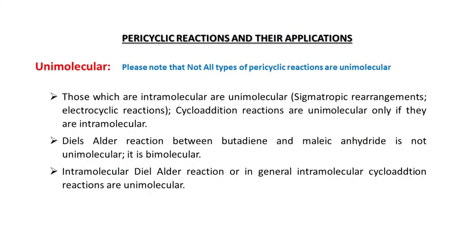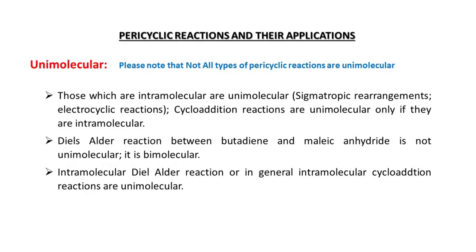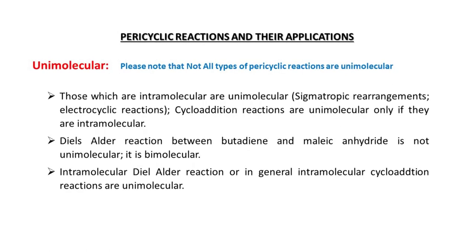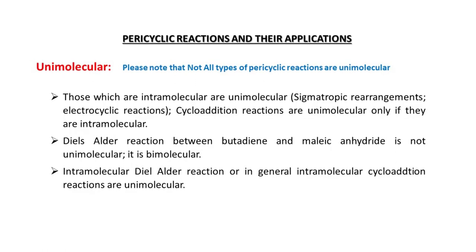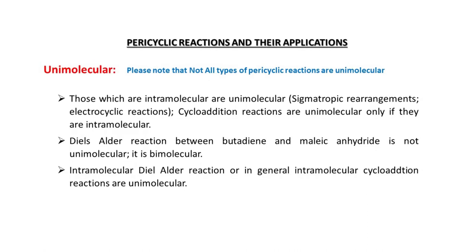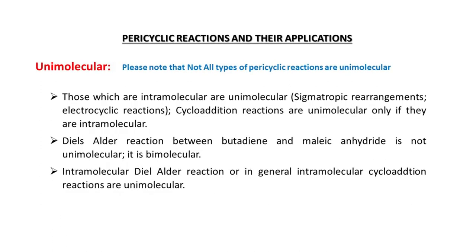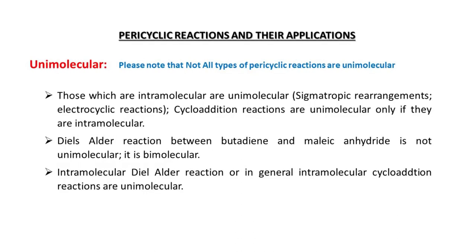Pericyclic reactions are induced by either thermal energy or photochemical energy. Among these types, very few are unimolecular in nature — for example, electrocyclic reactions and sigmatropic rearrangements. Cycloaddition reactions are unimolecular only if they are intramolecular. The Diels-Alder reaction between butadiene and maleic anhydride is a bimolecular reaction.